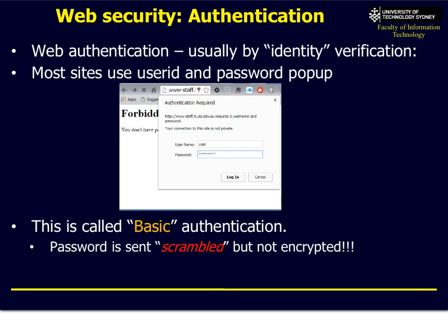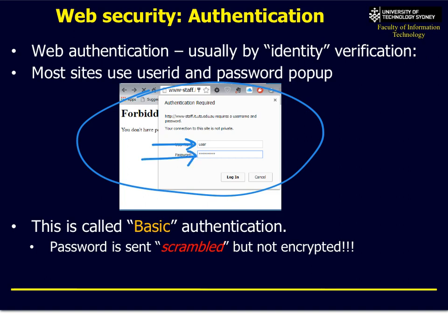Let's go back to our web example and log on to the web. We typically will have a pop-up. I logged on to the UTS staff website with my own account — it'll ask me to log in. This is what we call basic authentication. We simply have a user and enter a password. The fundamental problem is the password is transmitted in the clear. Despite the fact it shows asterisks, the computer at the other end and the network can see that password. It's scrambled slightly — more like a ROT64 algorithm — but it's super trivial to break. Two seconds of computing time on modern computers and it's done.